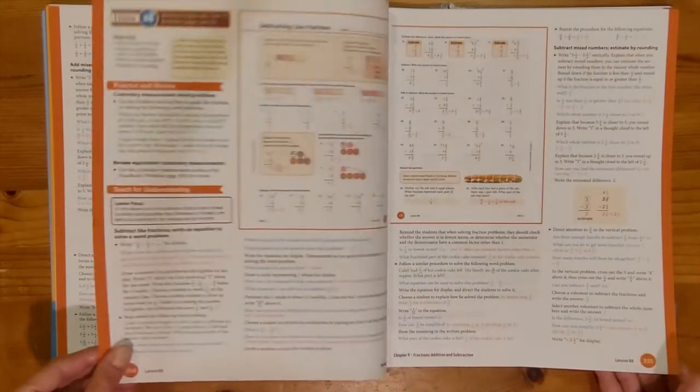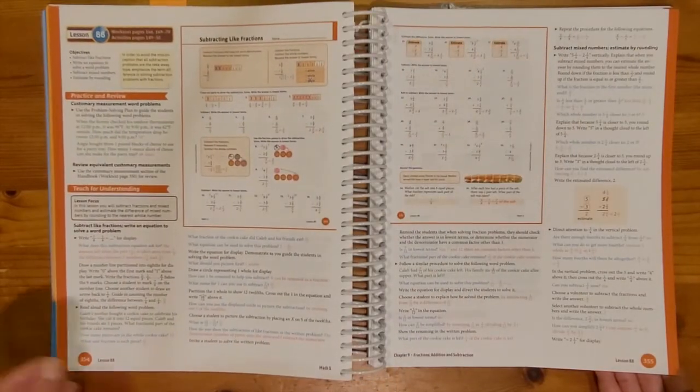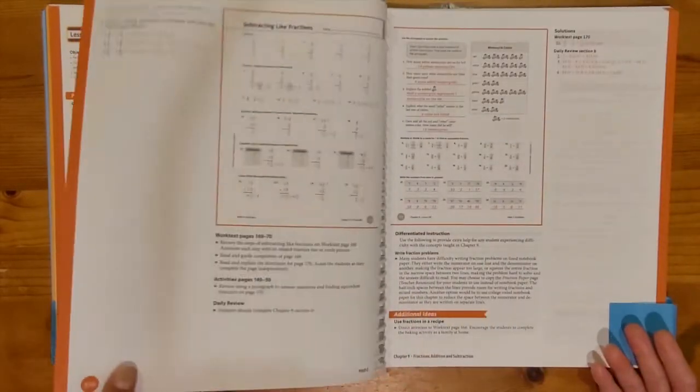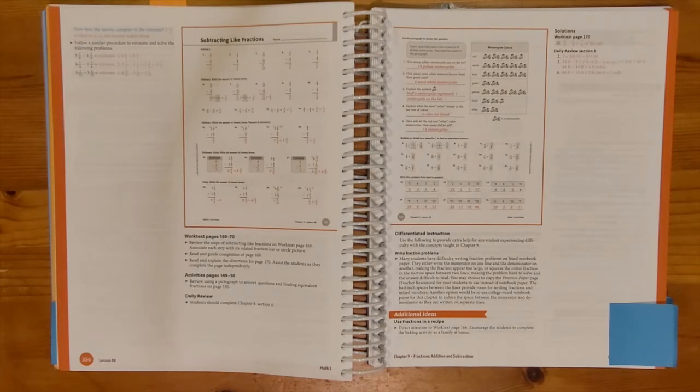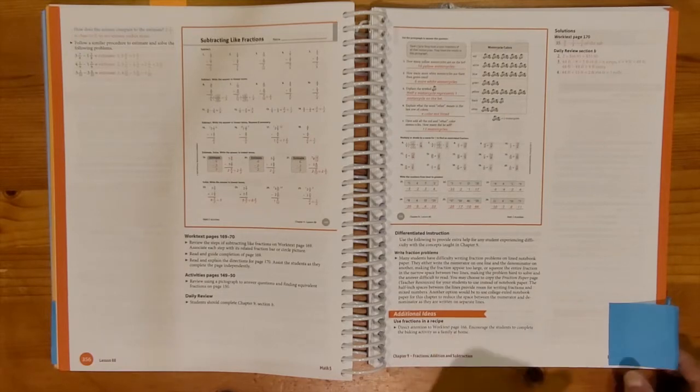I'm going to jump ahead now. This is lesson 88, which is subtracting like fractions. I do have a note here at the end that says to direct the attention to the worktext page 166. That was that exploring ideas worksheet where I would be doubling the recipe. So these are mixed in as you're going through your lessons as well.